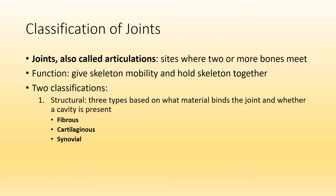We are able to classify joints based on two things. The first, and what we will primarily focus on in this lecture, is the structure of the joint. When classifying a joint based on its structure, you want to consider what material is binding the joint together and whether there is a joint cavity. We have three structural classifications: fibrous joints, cartilaginous joints, and synovial joints.